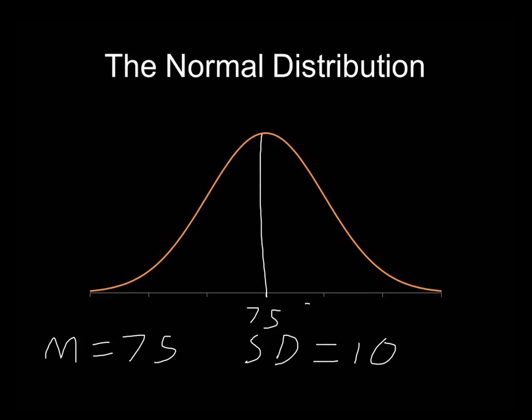So one standard deviation above the mean would be a score of 85. Two standard deviations above the mean would be a score of 95. And going below the mean, we'd have 65, and we'd have 55.